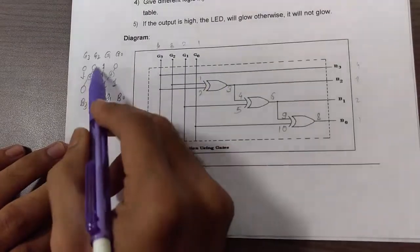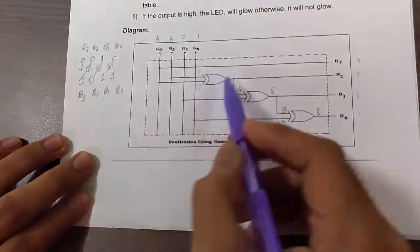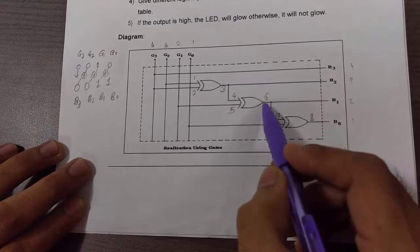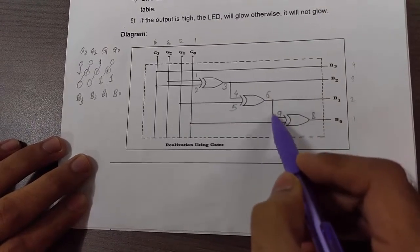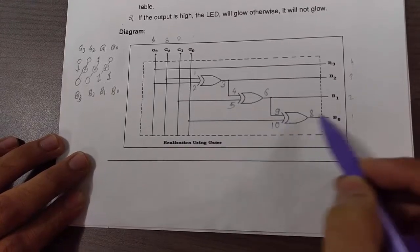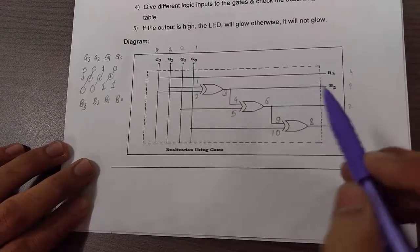The output of first XOR gate is XORed with next bit. Output of this XOR gate is XORed with next bit. Likewise, output of this XOR is given as input to next XOR gate and G0 is given as input over here. And output is taken from pin number 8. In this way we get B0, B2, B1, B2 and B3.